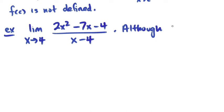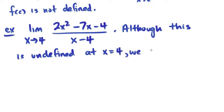We can use some algebra though to help us out. So although this is undefined at x equals 4 because the denominator would be equal to 0, we can do a little trick which is we can factor the numerator.